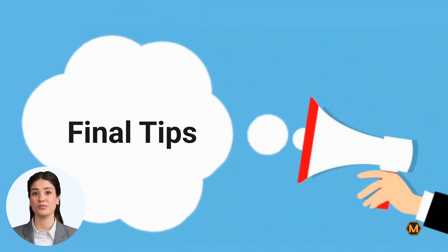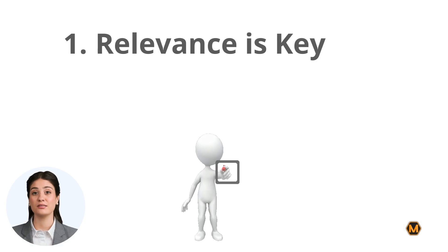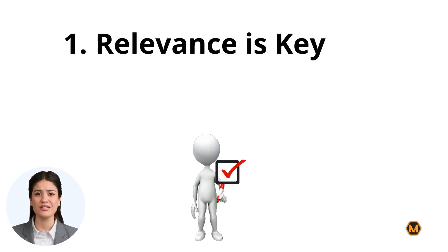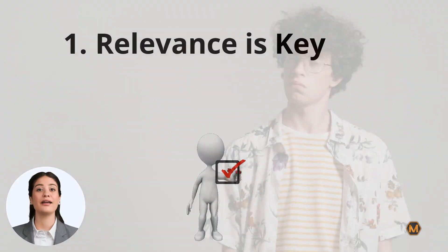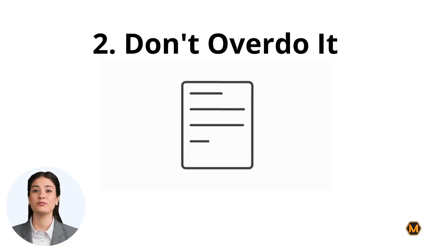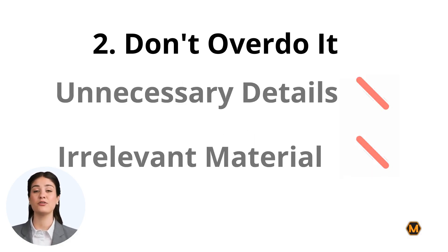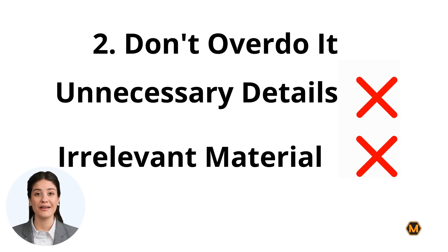Before we wrap up, here are some final tips on using the appendix effectively. Relevance is key — only include information that truly supports your research. Don't add anything that doesn't add value. Don't overdo it — only include information that is directly relevant and helpful to the main content. Avoid overloading it with unnecessary details or irrelevant material.